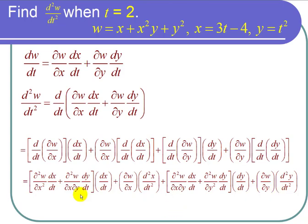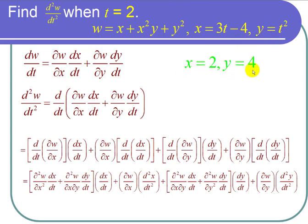Now I need to find each of these terms. First, plug in t equals 2 to get x and y. 3 times 2 is 6, minus 4 is 2, so x equals 2. And 2 squared is 4, so y equals 4.